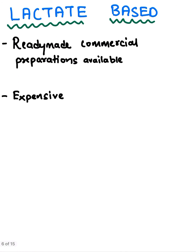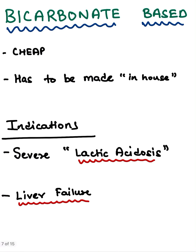Lactate-based fluids are readily available, but they are expensive — that's the main problem. The bicarbonate-based solutions are cheap and they have to be made in-house. The main indications for using bicarbonate-based PD fluids are severe lactic acidosis and liver failure. Why liver failure? Because when the liver fails, it is unable to convert lactate to bicarbonate to reduce the metabolic acidosis. That's one of the main reasons why we use bicarbonate-based PD fluids.